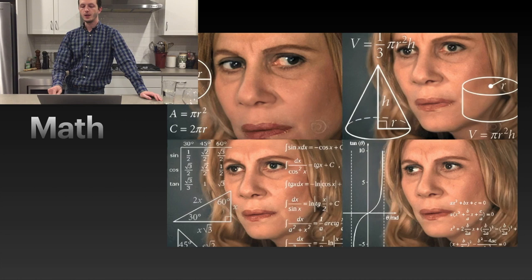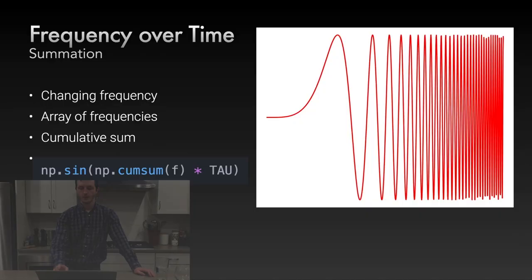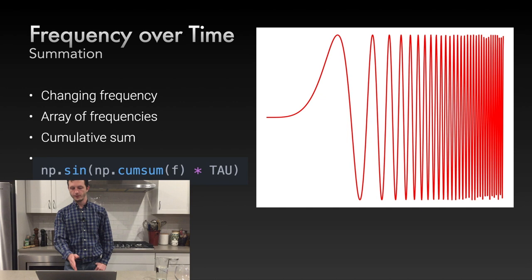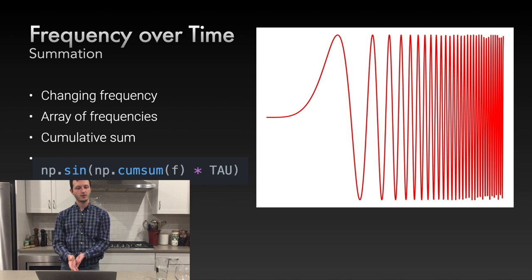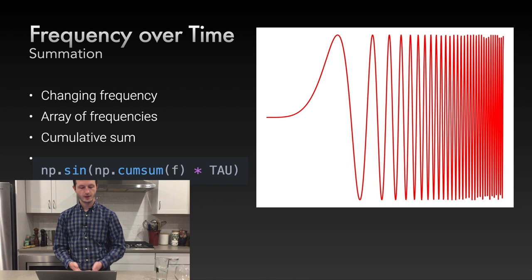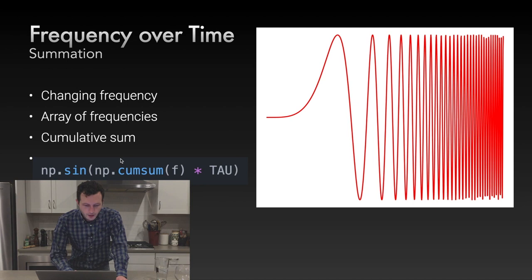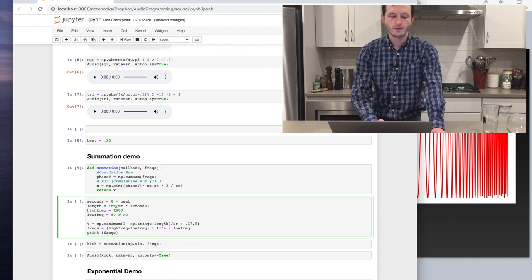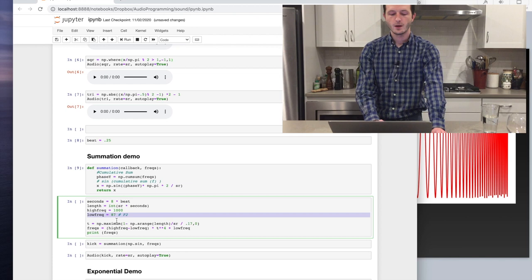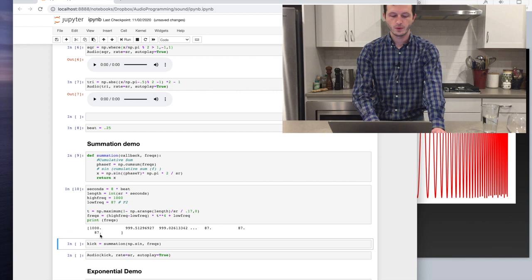Now we'll get into the math needed for sound design. First: frequency over time — anything with a changing frequency, like a pitch bend or a kick drum where the note starts at one frequency and changes to another. You have an array of frequencies at each time step and want to combine them into a wave without phase effects. All you do is a cumulative sum in NumPy — cum_sum — run through the frequencies multiplied by 2π. For our kick drum demo: starting at 1000 Hz for the hit, dropping to 87 Hz for the bass note on a t⁴ curve.